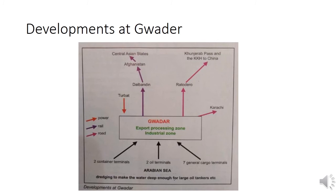This can be shown through a flowchart: landlocked Central Asian states through Afghanistan are going to be linked with Gwadar, and on the eastern side through Khunjerab Pass and the Karakoram Highway from China, it can be linked with Gwadar — making it a short-distance corridor for trade activity.